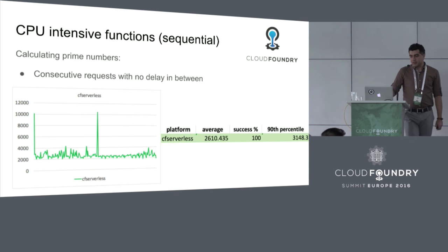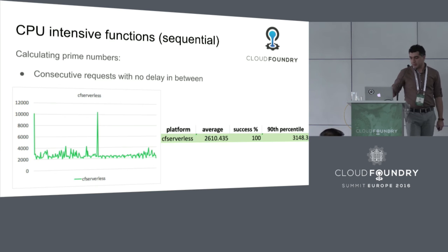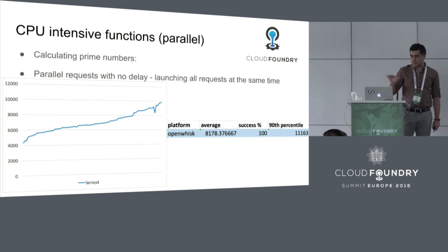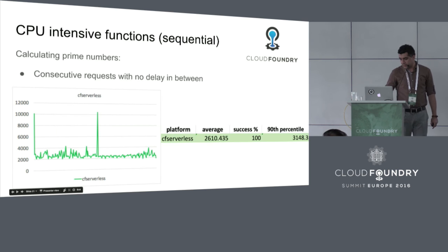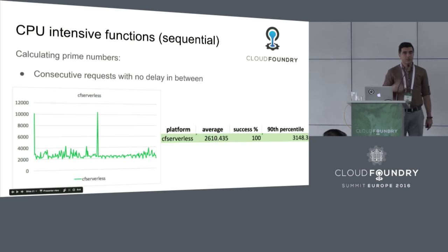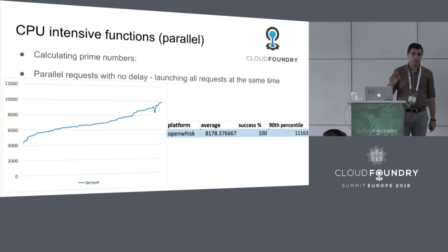The other experiment was CPU-intensive functions — calculating prime numbers, a very common CPU-intensive benchmark — run across all environments. For CF Serverless in the sequential case, except for the spikes explained earlier, it's pretty much a flat line: 100% success, with each calculation taking around 2.5 seconds. In the parallel case for OpenWISC, as requests come in, response time goes up, but not dramatically. The overall average in the sequential case was around 26 seconds, and in the parallel case, around 8 to 9 seconds across the platforms we experimented with.